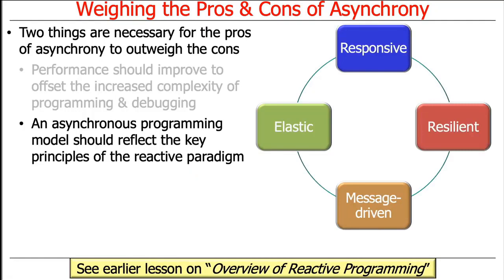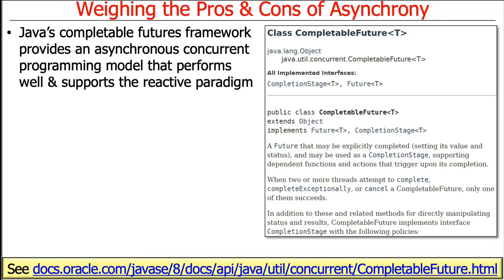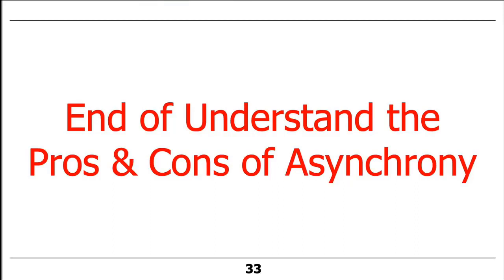Second, we'd like the asynchronous programming model to reflect the key principles of the reactive paradigm. Java CompletableFutures provides a nice asynchronous concurrent programming model that performs well and supports the reactive paradigm. It's not the only model for async programming in Java — there are also reactive streams implementations like RxJava and Project Reactor, which often go even further in supporting asynchronous programming. However, they can be even more complicated to learn, with literally hundreds of methods in their key interfaces, compared to the roughly 60 methods in the CompletableFutures API versus around 300 in reactive streams.